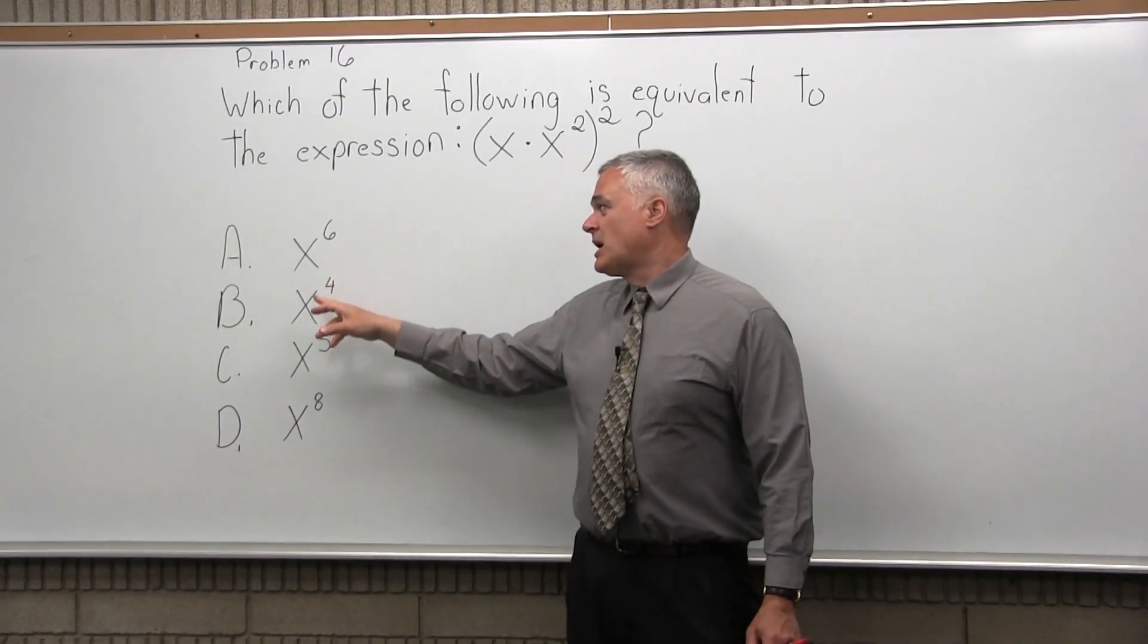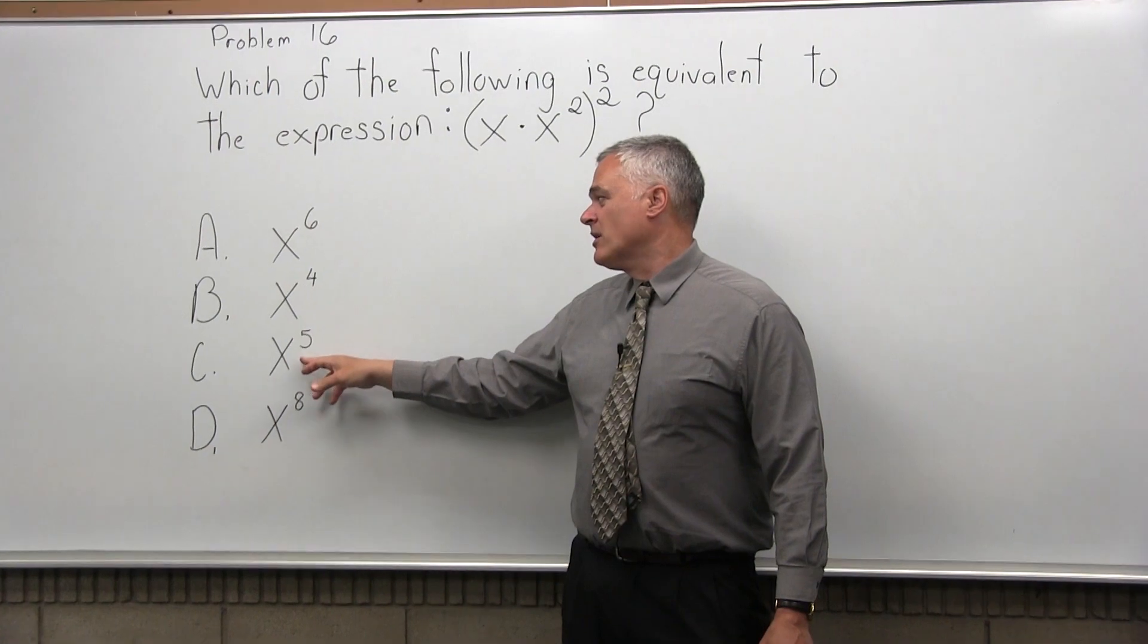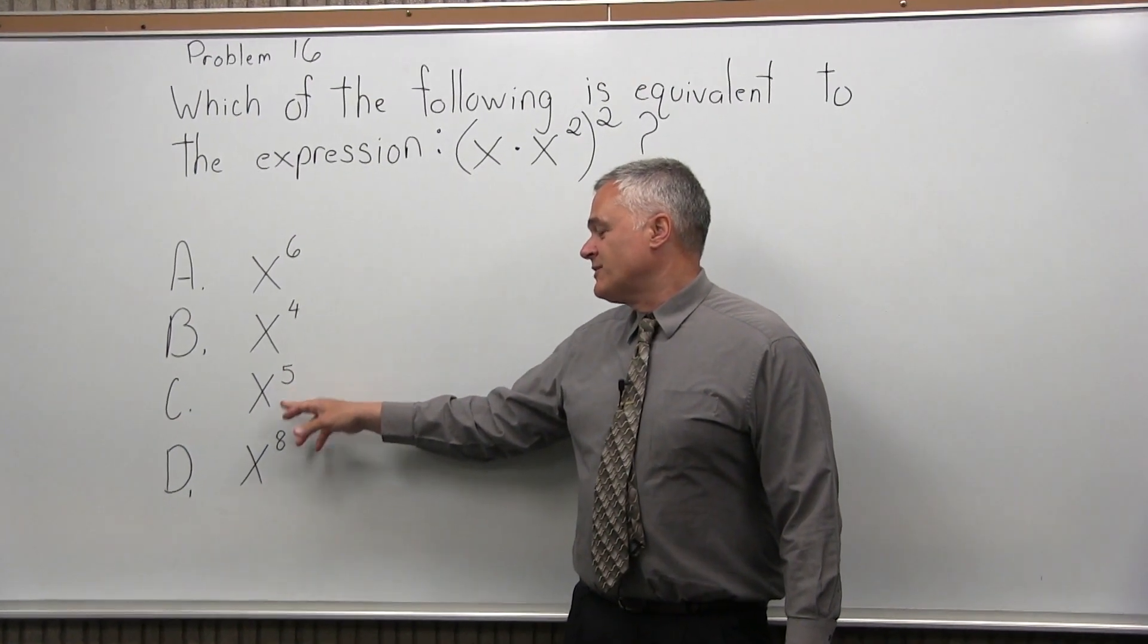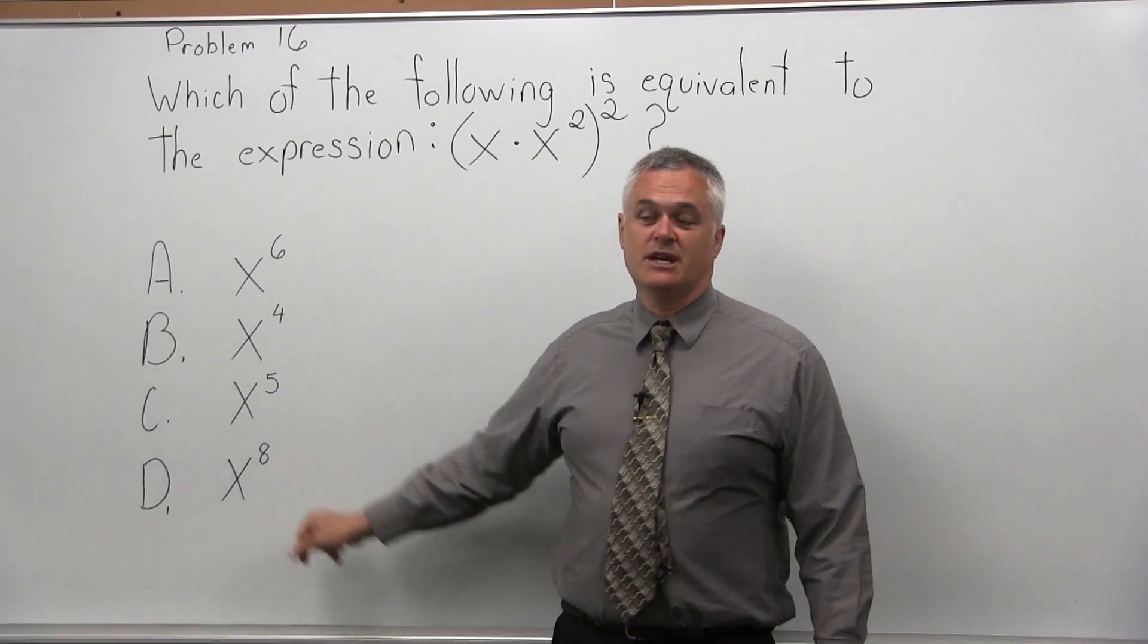Option A is x to the sixth power, option B is x to the fourth power, option C is x to the fifth power, and option D is x to the eighth power.